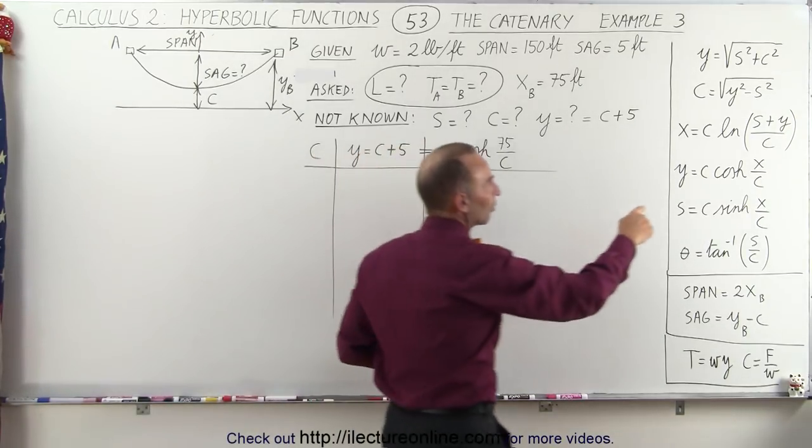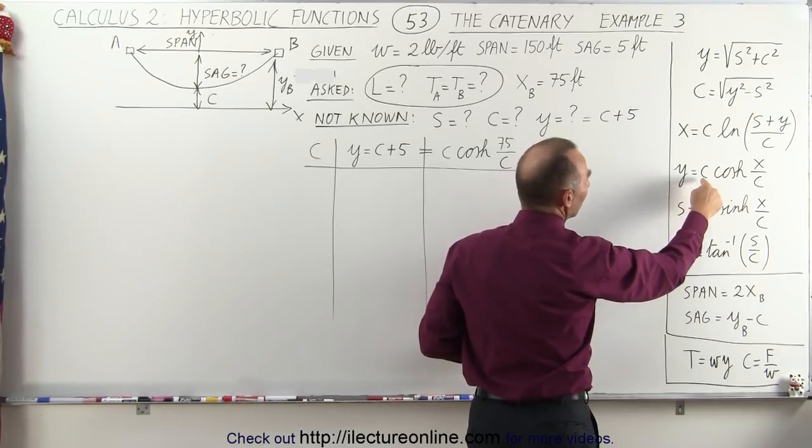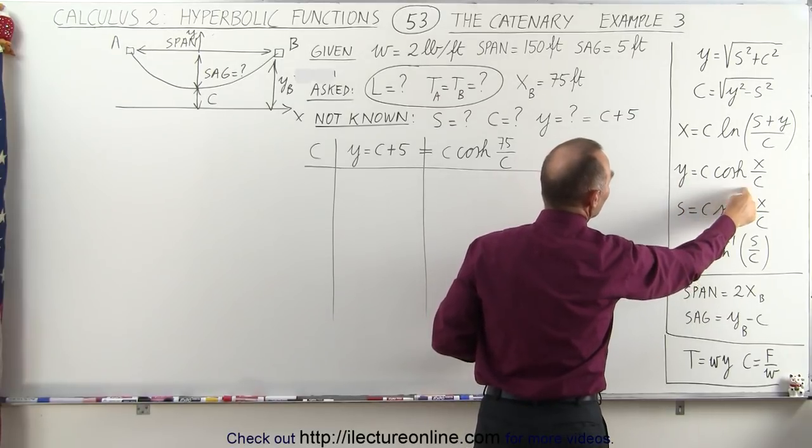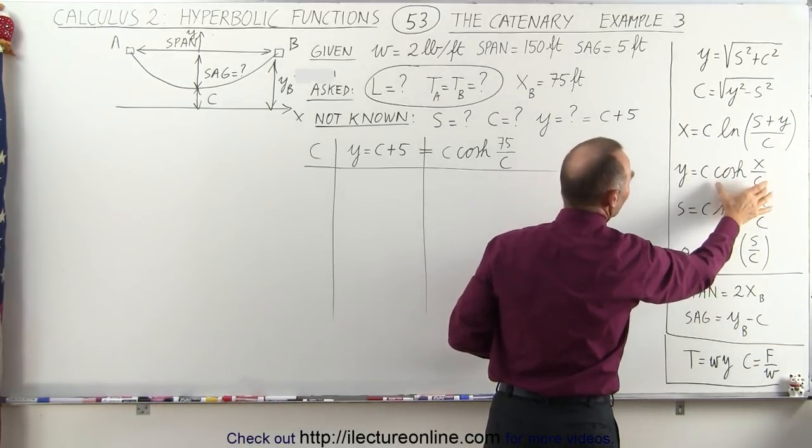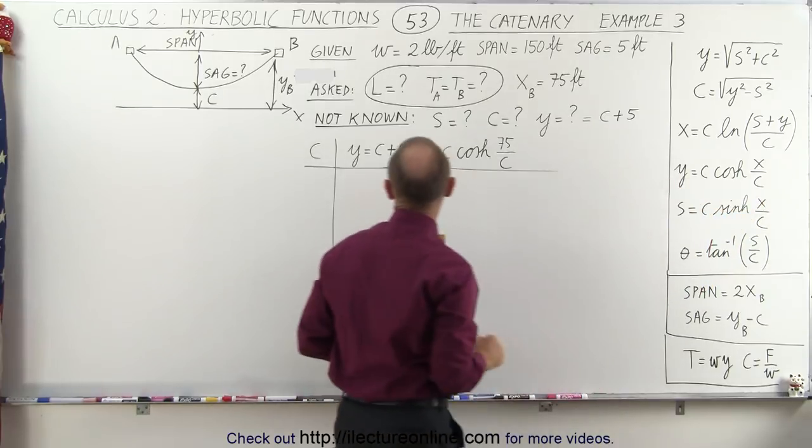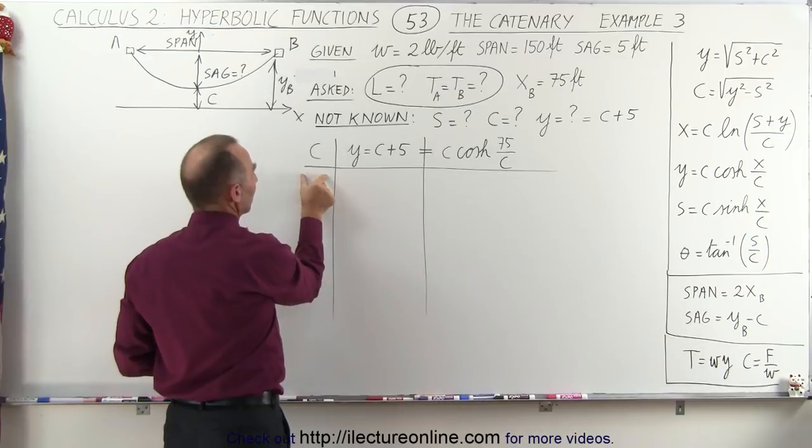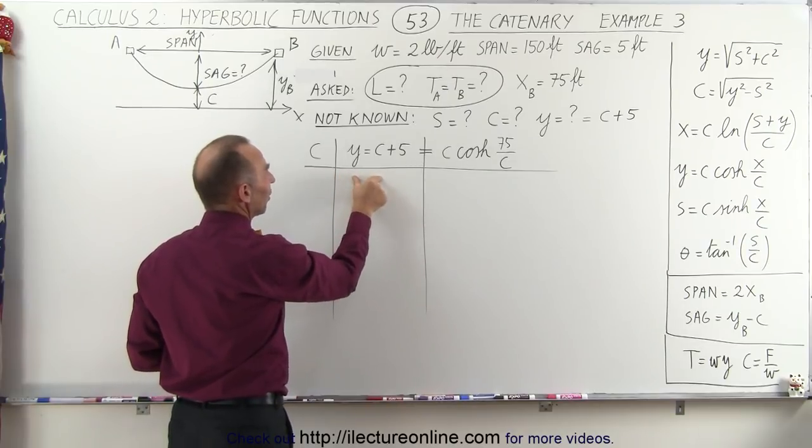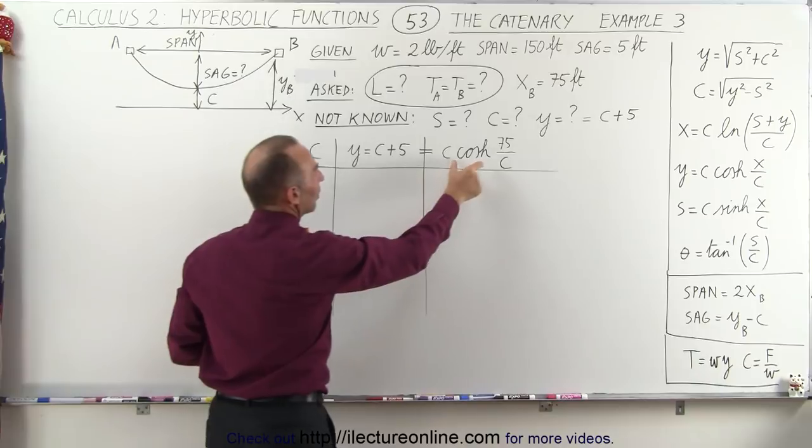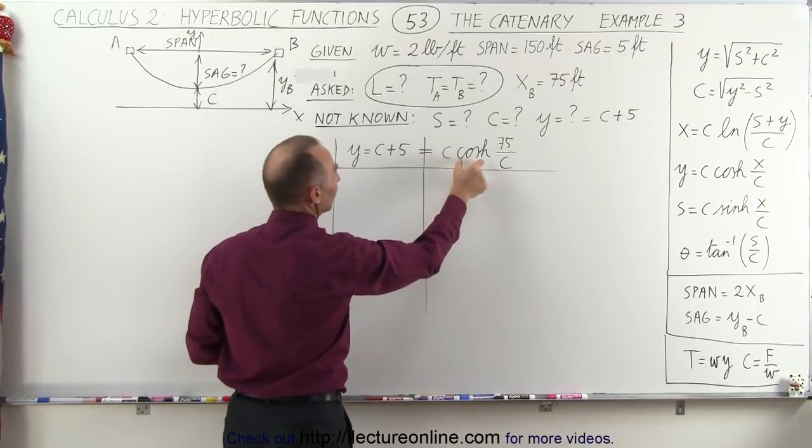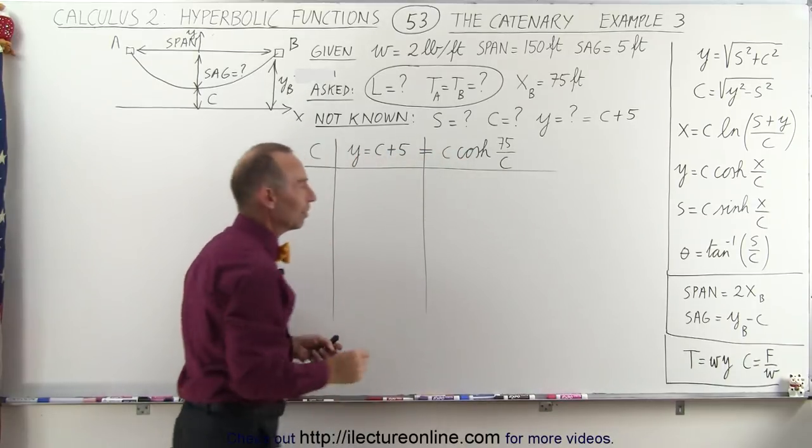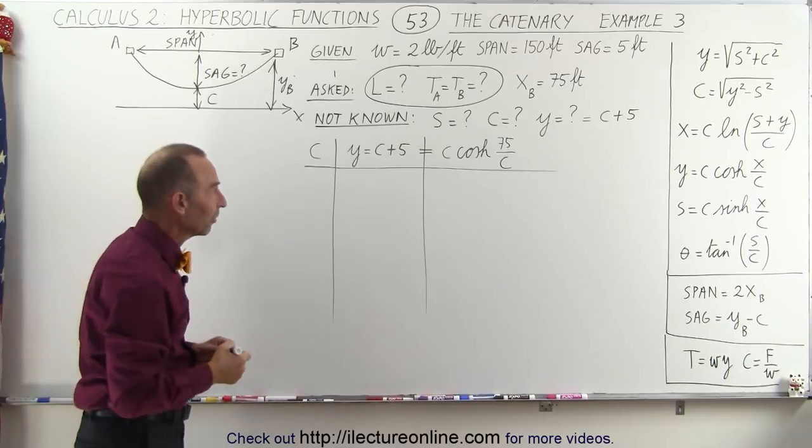We're going to use this equation. We're going to find y by plugging in particular values for c, and when we pick the right value for c the right side will equal the left side. Now we realize that y is c plus 5, so whatever we plug in here we need to add 5 to make this equal to this. And then we check to see if we pick the right c to make this equal to c plus 5. So that's the process.